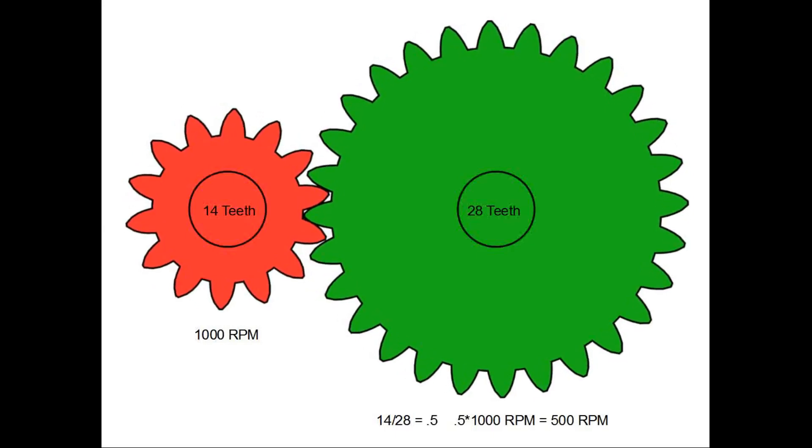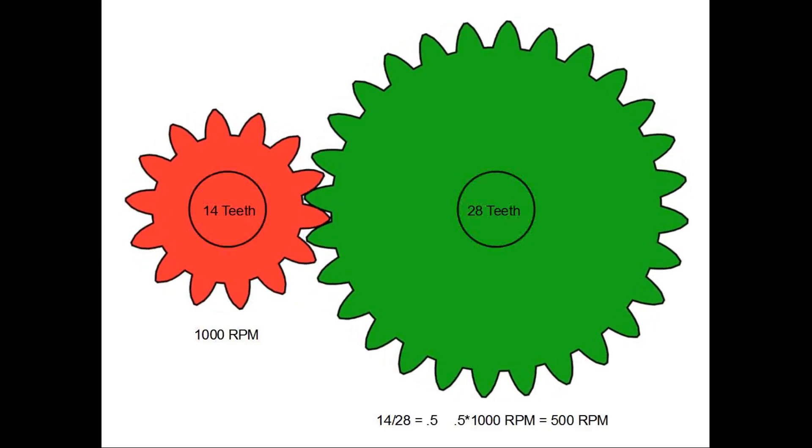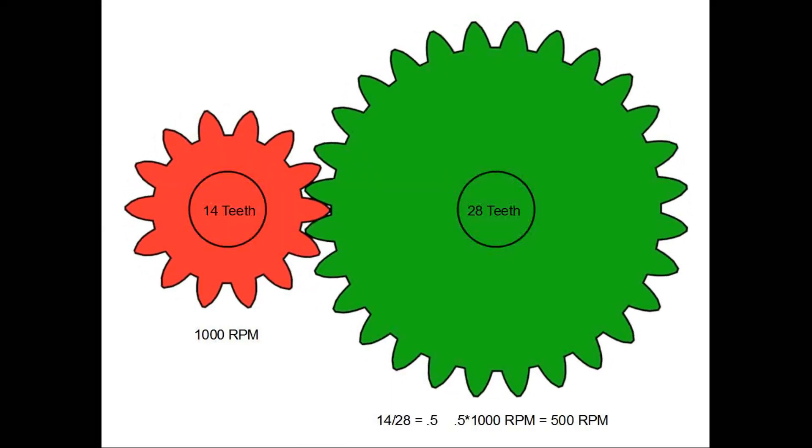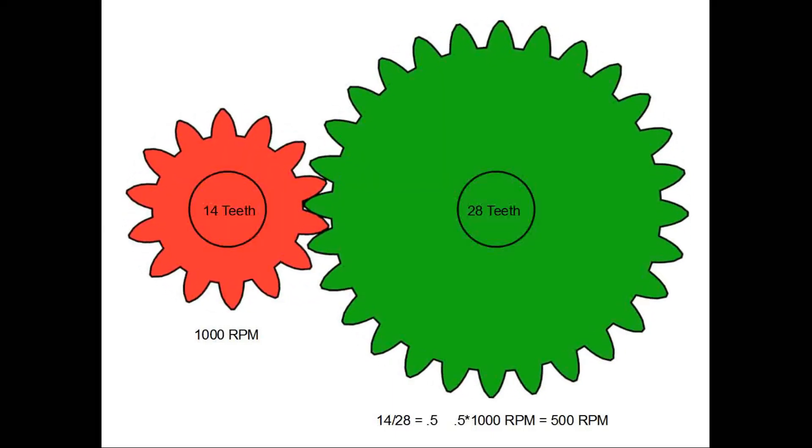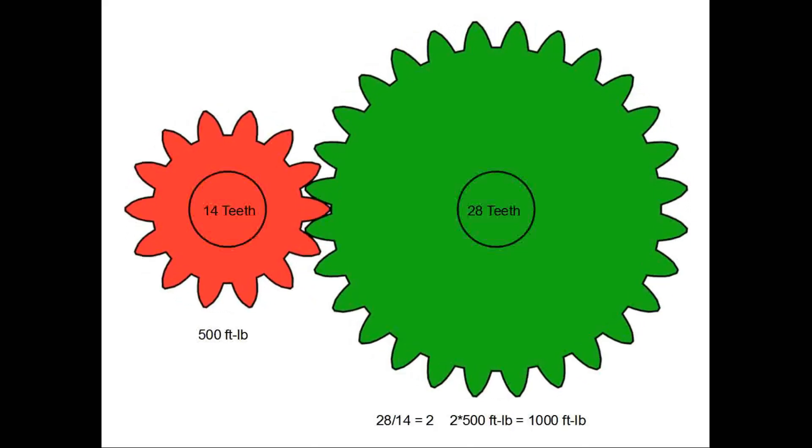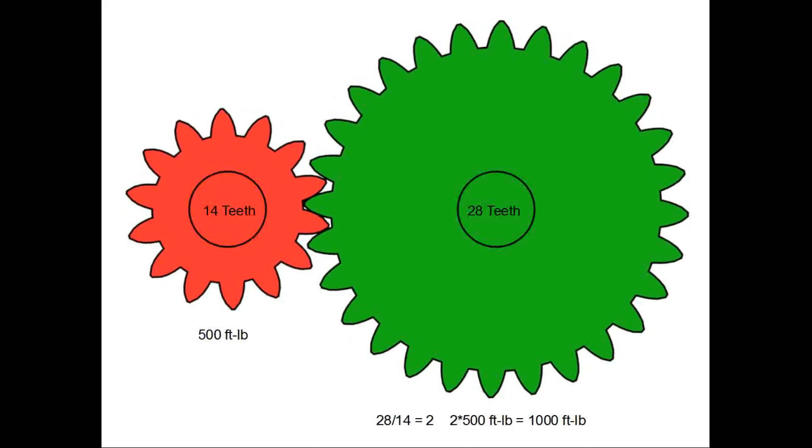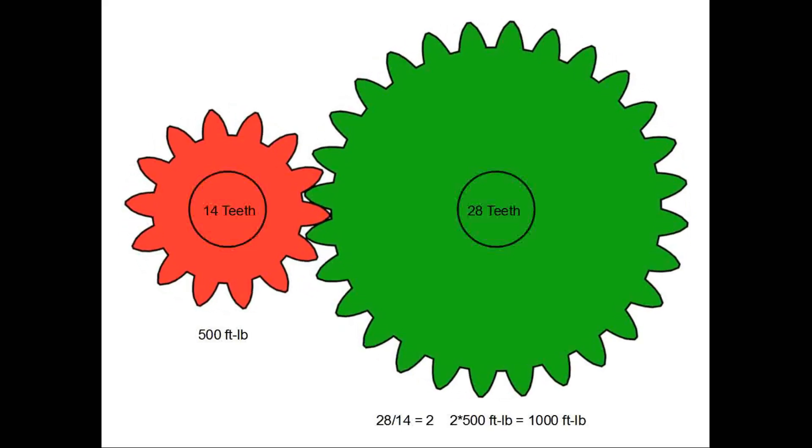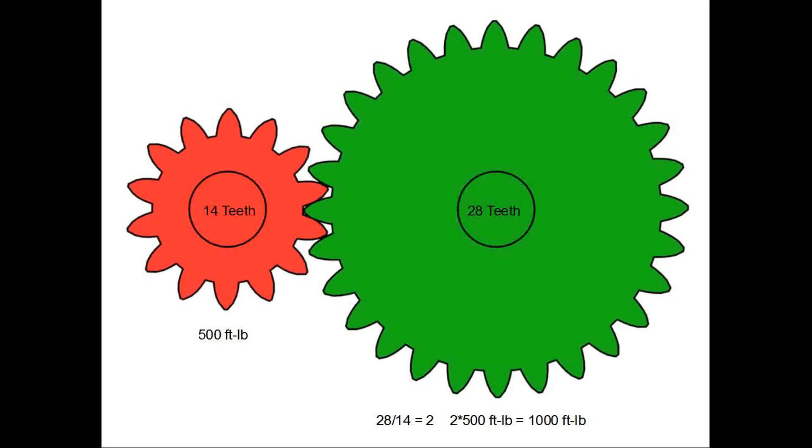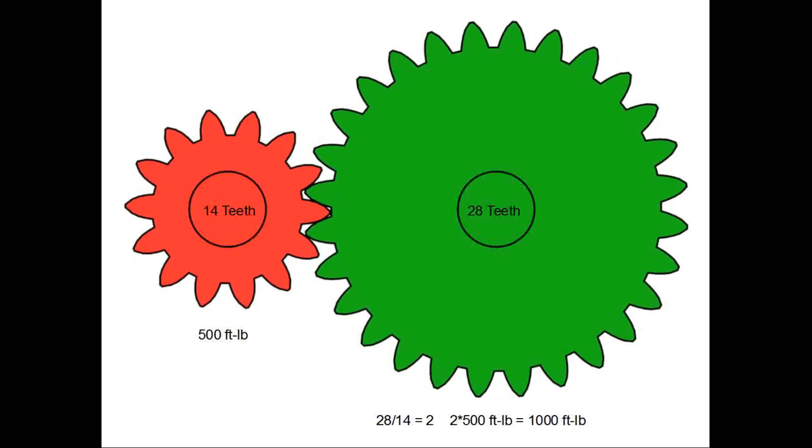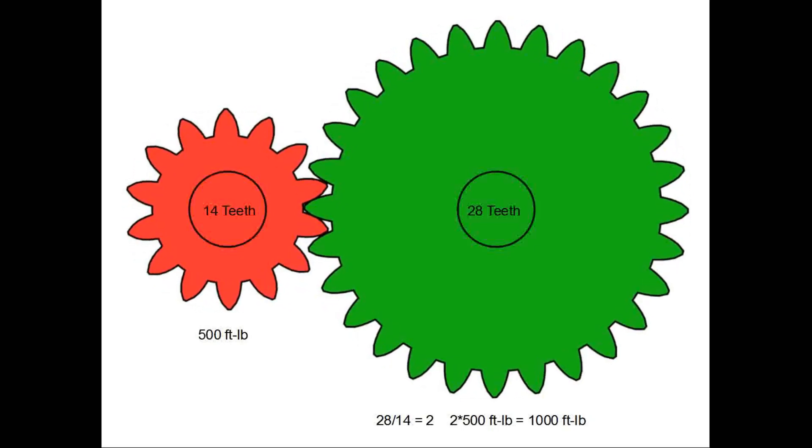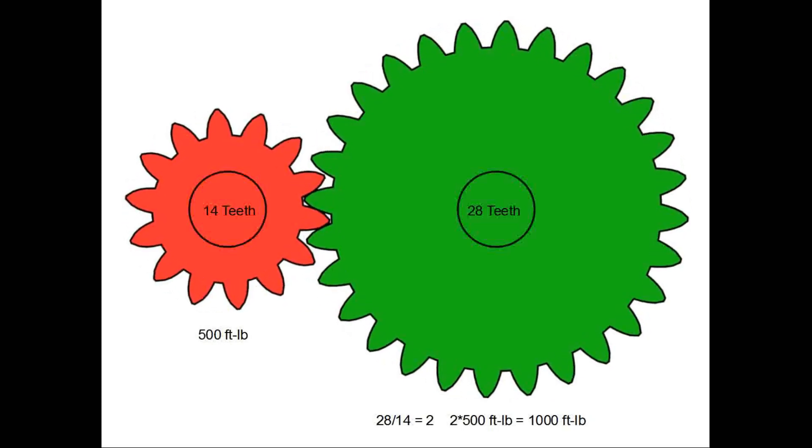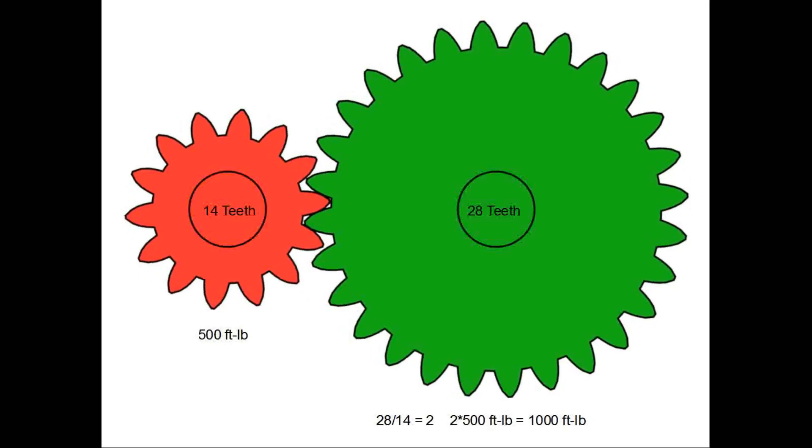But another really important thing happens. While the speed is reduced by the ratio of gear teeth, the torque transmitted is increased by the inverse ratio. This is, of course, simplified by ignoring frictional and parasitic losses. So if we have 500 foot pounds at the 14 tooth gear, we'll see 28 divided by 14 equals 2 times 500 or 1000 foot pounds at the 28 tooth gear. This is why your car will accelerate quicker if you increase the gear ratio. Like going from a 3.08 rear gear to a 4.56 gear will feel like you added 100 or more horsepower.